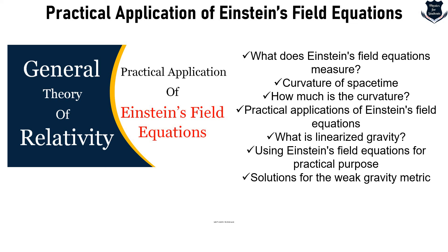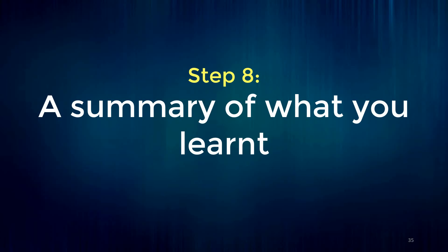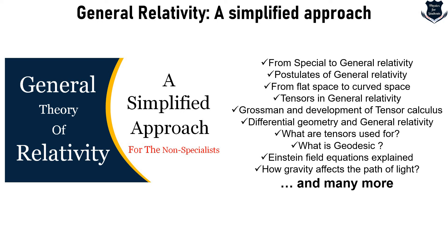We have now gone through seven topics. Step number eight is always good practice: take a step back and summarize whether you remember everything. I have a simplified yet detailed video which contains everything discussed so far — special relativity, flat space, Einstein's tensor, differential geometry, geodesics, and how gravity affects the path of light. Step eight — the link is also provided in the description. Following these steps sequentially, you will never get confused.